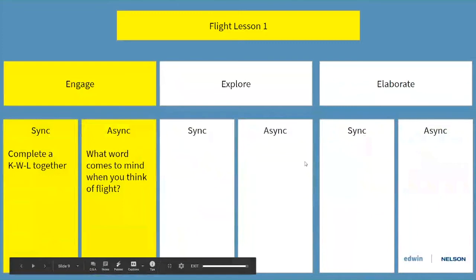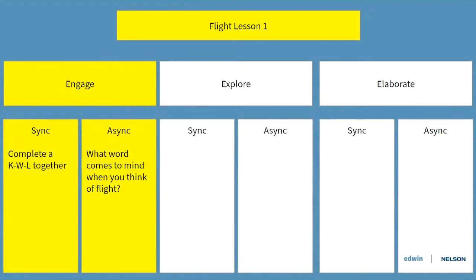One activity you can do synchronously is a KWL chart — what students know, what they want to know, and what they have learned. Synchronously, that could mean being on Google Meet with a collaborative Google Doc open where everyone's filling it in, or having them fill in their own and share it with you. You could use Pear Deck to answer in real time. Or you could do it asynchronously — use Edwin or your learning management system to assign the content and have them fill it in and send it back at their own pace.